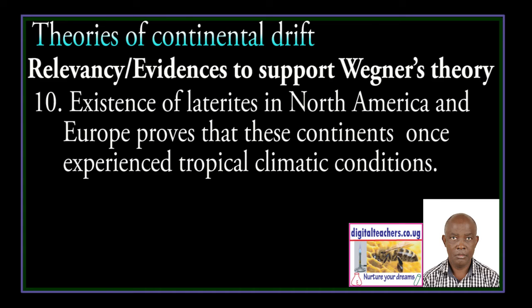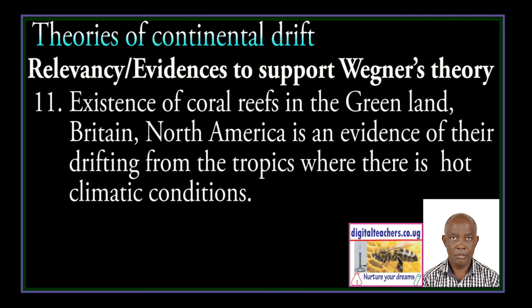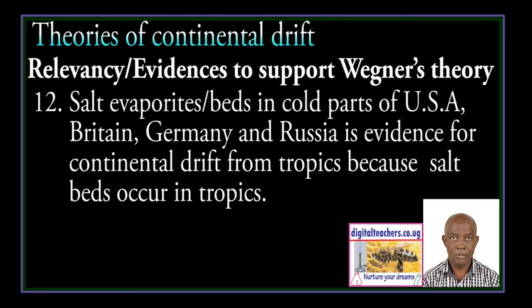The existence of laterites in North America and Europe proves that these continents once experienced tropical climatic conditions. The existence of coral reefs in Greenland, Britain, and North America is evidence of their drifting from the tropics. Salt dams in the underground parts of USA, Britain, Germany, and Russia are evidence for the continent drifting from the tropics, because salt dams occur in the tropics.